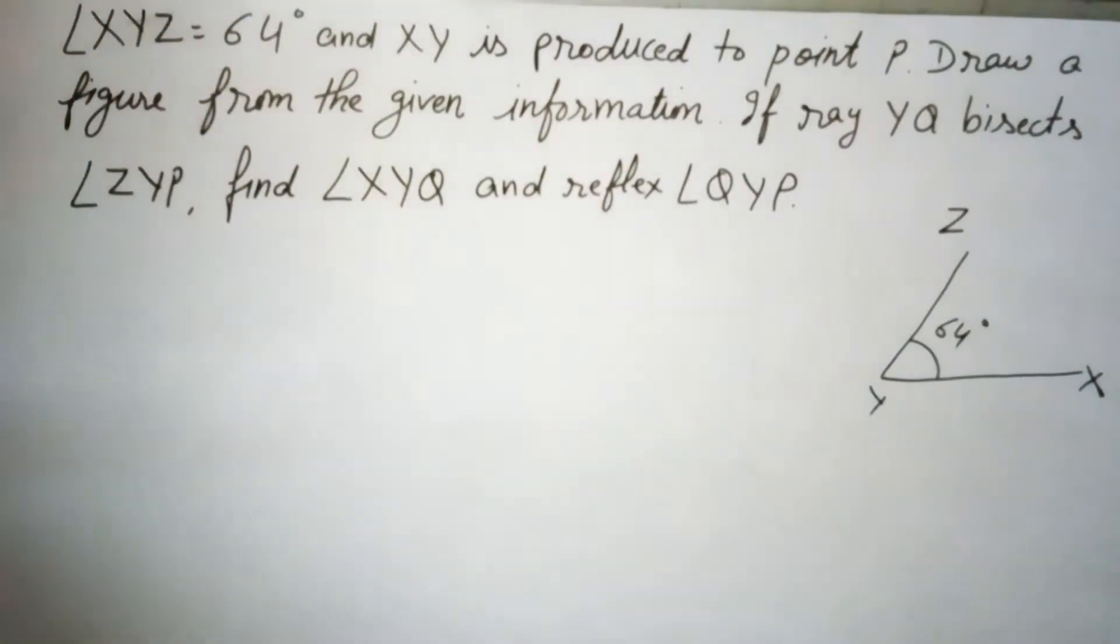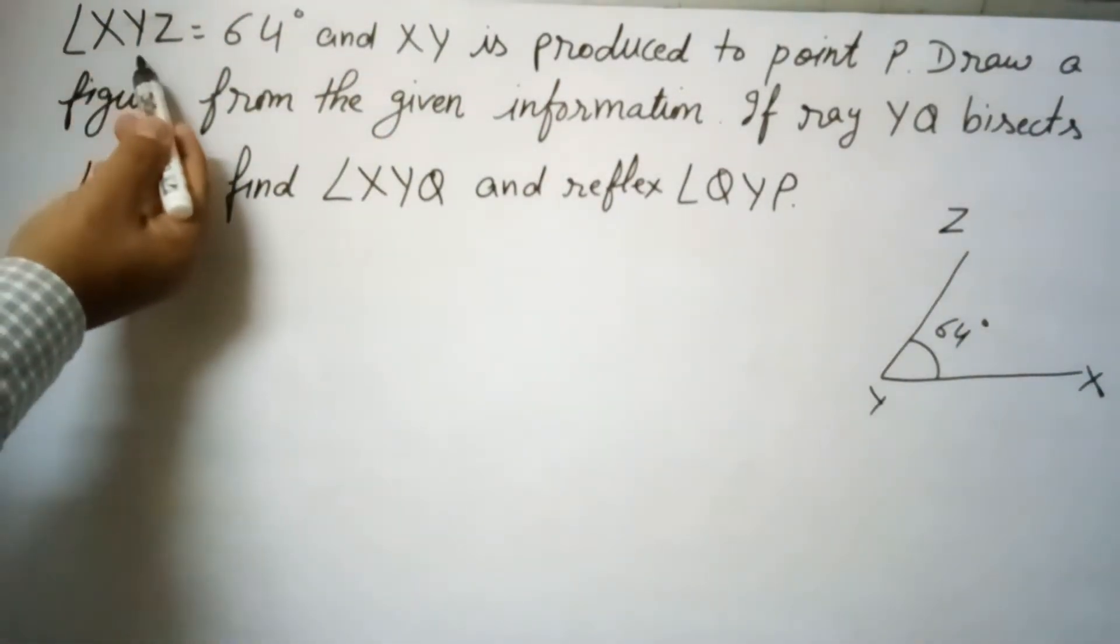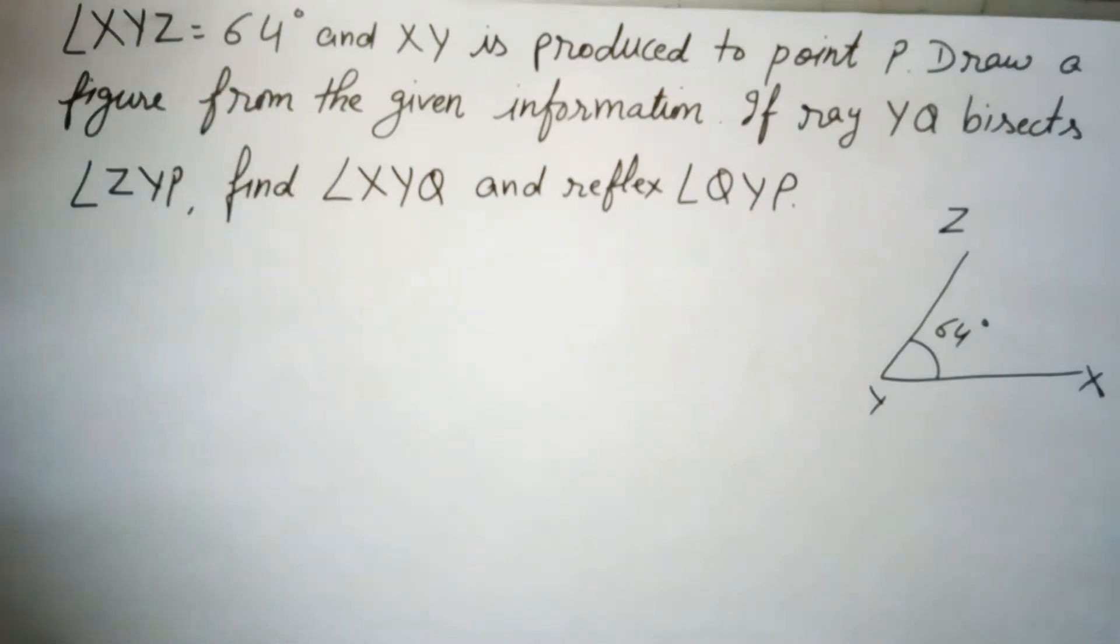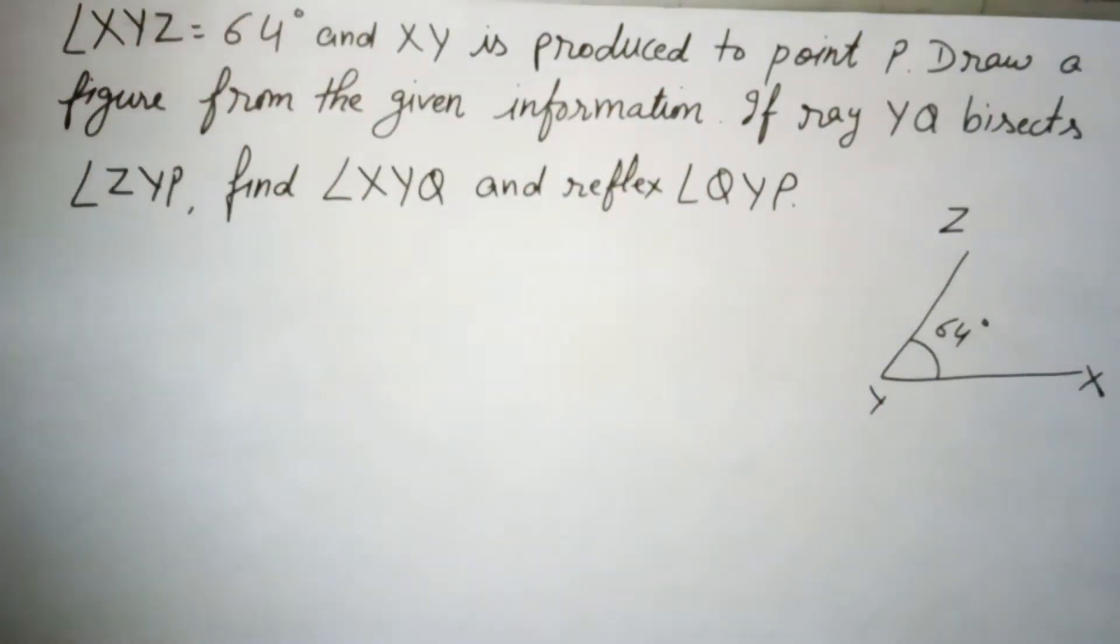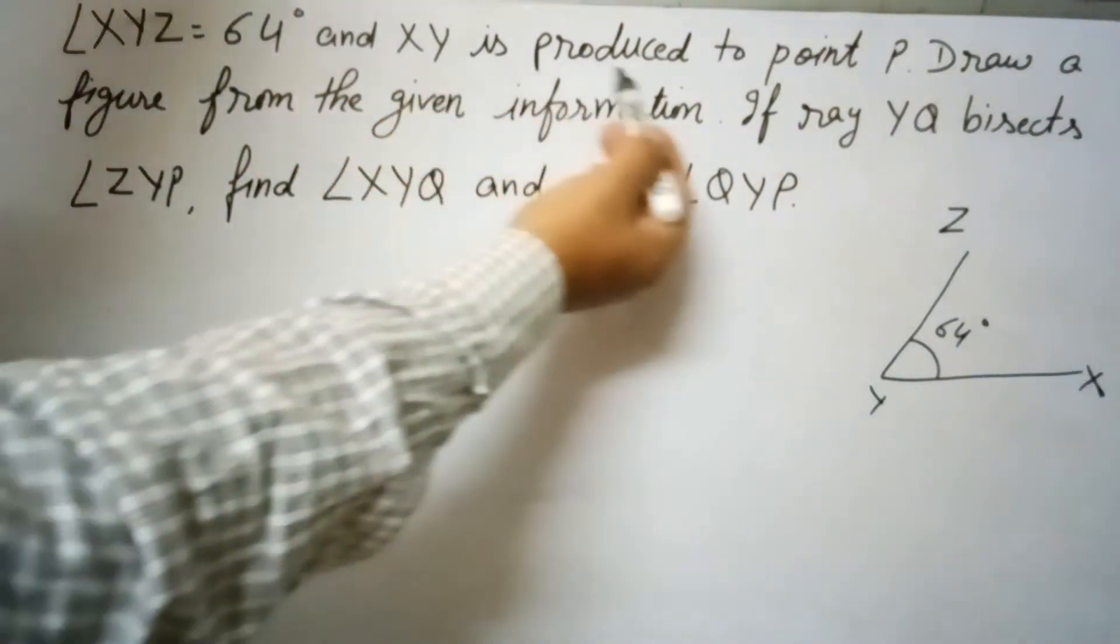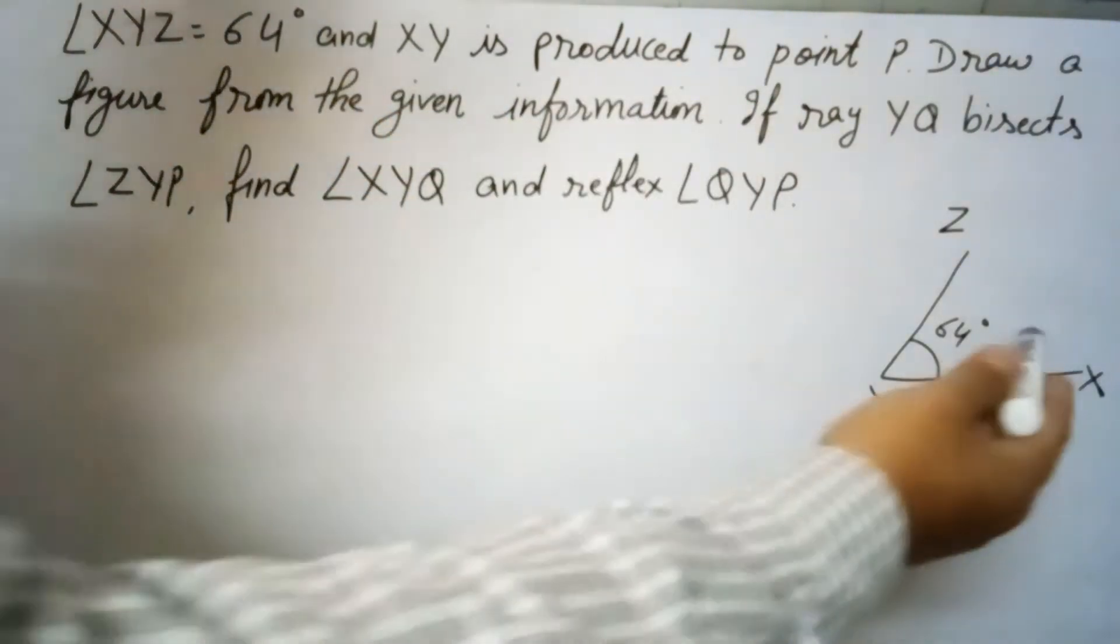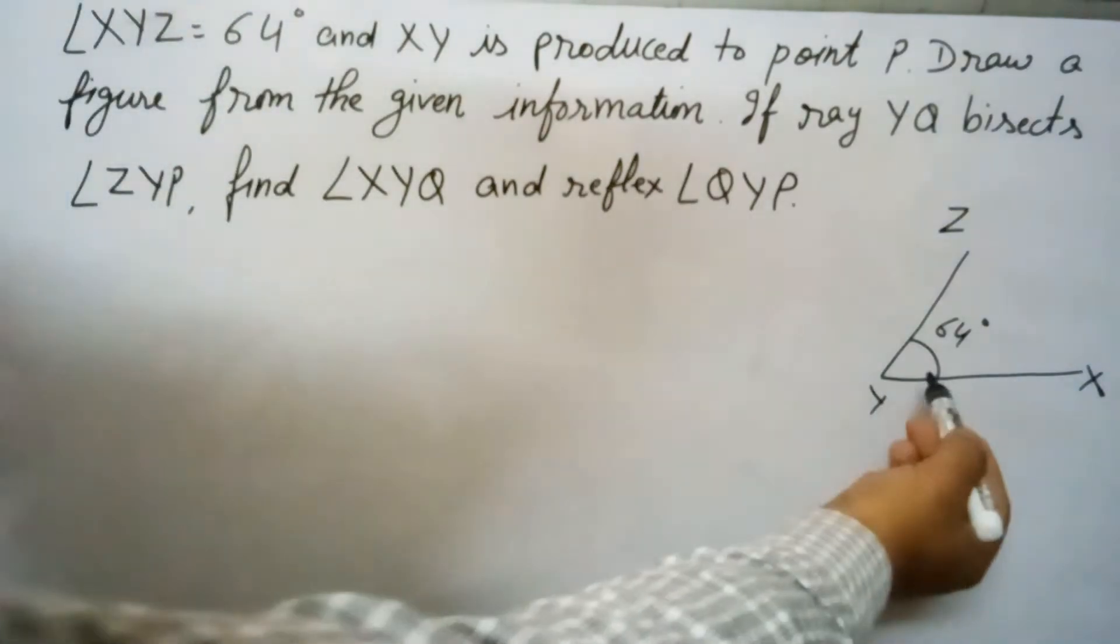Students, this question states angle XYZ equals 64 degrees. So this is angle XYZ which equals 64 degrees, and XY is produced to point P. XY means this line is produced here to this side to point P.